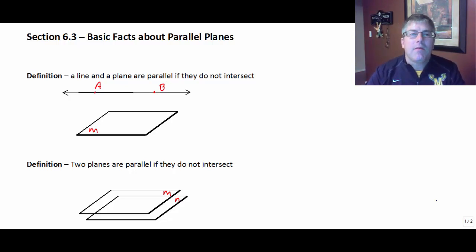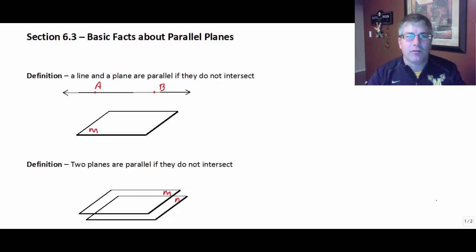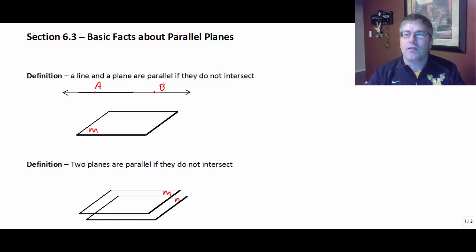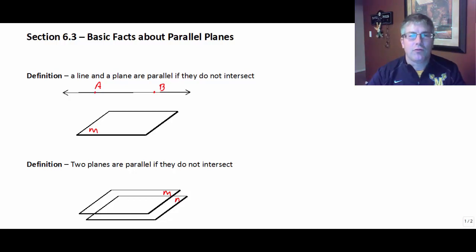To begin, we'll start with a definition — and this is going to be reversible. A line and a plane are parallel if they do not intersect. So if we have a plane and a line and they are parallel, they will never intersect. The converse of that is also true.